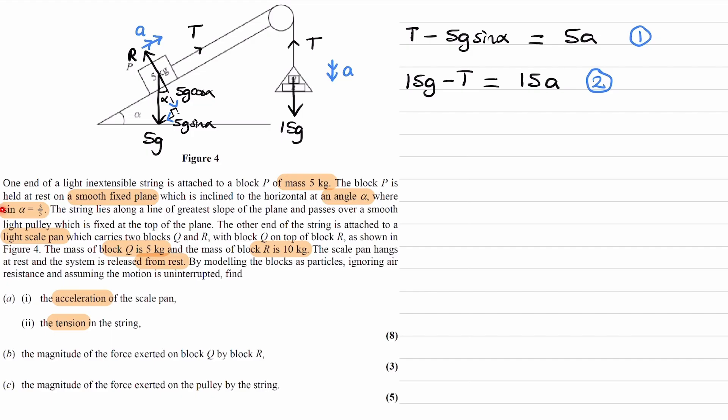So, we know that sin alpha is 3 over 5. So, here we will have 3 over 5. 3 over 5 multiplied by 5 is just 3. So, equation 1 becomes T minus 3G is equal to 5A. That's equation 1. Now, we can add equations 1 and 2.